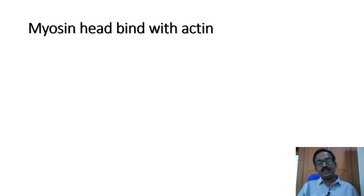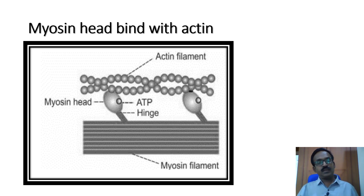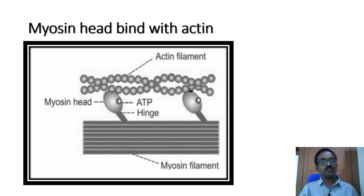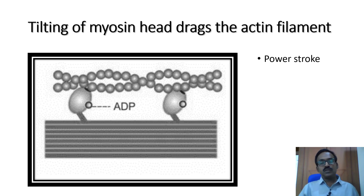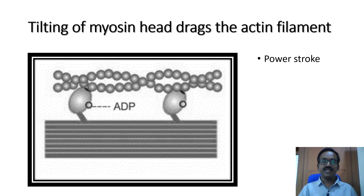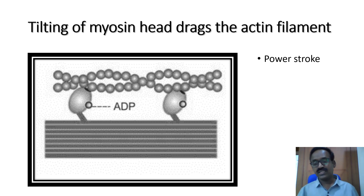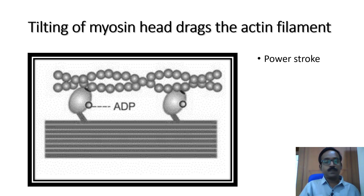The myosin head then binds with the actin. For this binding, ATP is attached with the myosin head and is converted to ADP and high-energy phosphate. That high-energy phosphate is utilized for the tilting of the myosin head, which tracks the actin filament. This is called the power stroke.